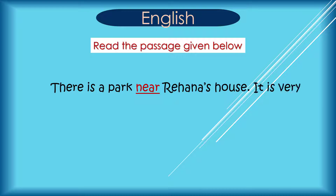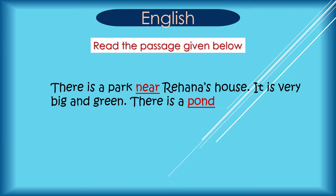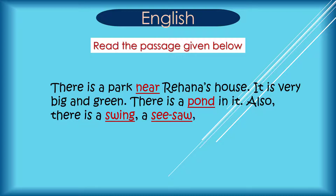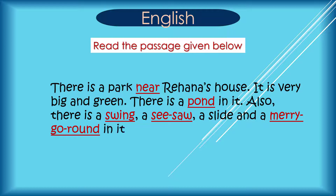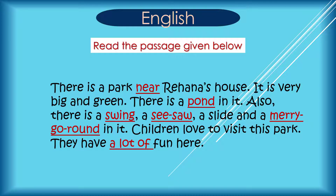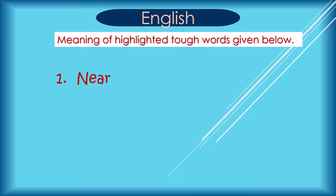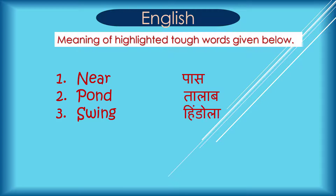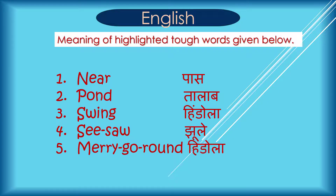Now, here are some tough words. Now, we will know the Hindi meaning of these words. One, near means paas. Two, pond means talaab. Three, swing means hindola. Four, seesaw means jhule. Five, merry-go-round means hidola. Six, a lot of means bahut saade.